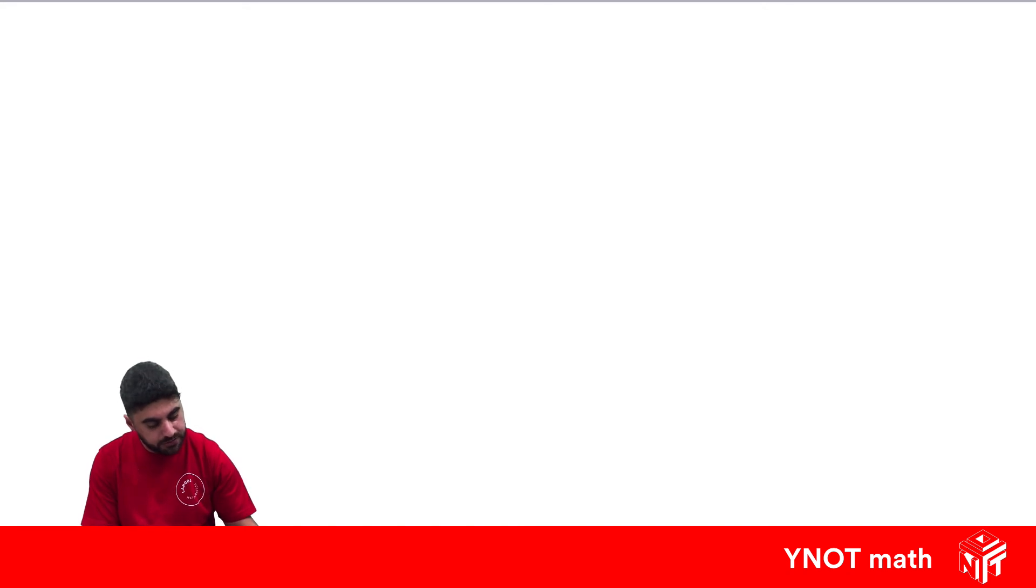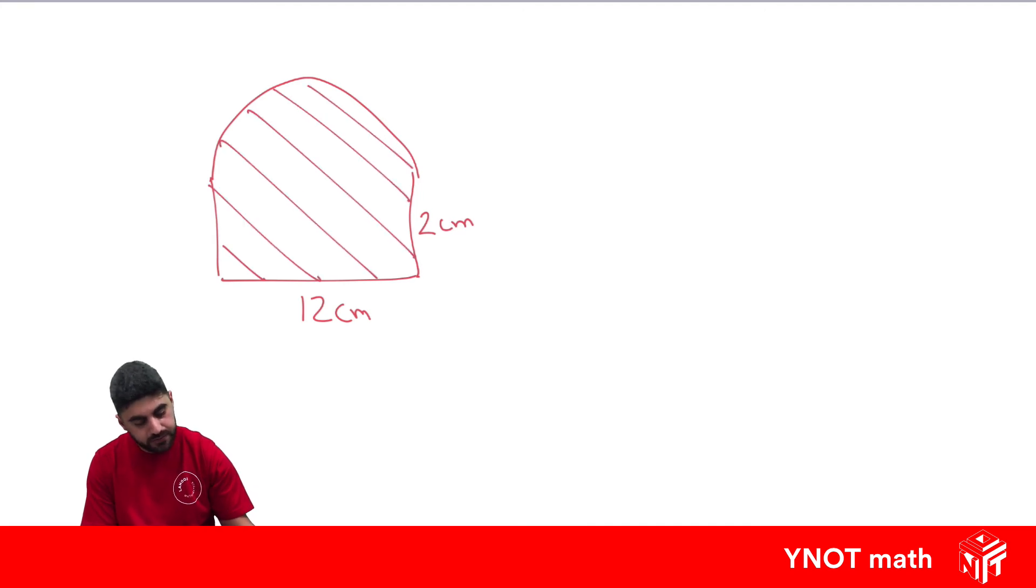Let's look at a composite shape that looks something like this. If we know this is 12 centimetres and this is 2 centimetres, what's the area of all of this? Well here, we've just got half of a circle on top and a rectangle at the bottom.